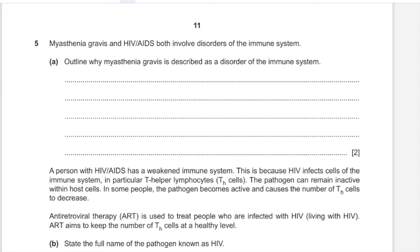Myasthenia gravis and HIV/AIDS both involve disorders of the immune system. Myasthenia gravis is an autoimmune disease where the immune system carries out an immune response against the body's own antigens, mistaking them for non-self antigens. In myasthenia gravis specifically, it is the T helper cells that are responsible for the immune response.